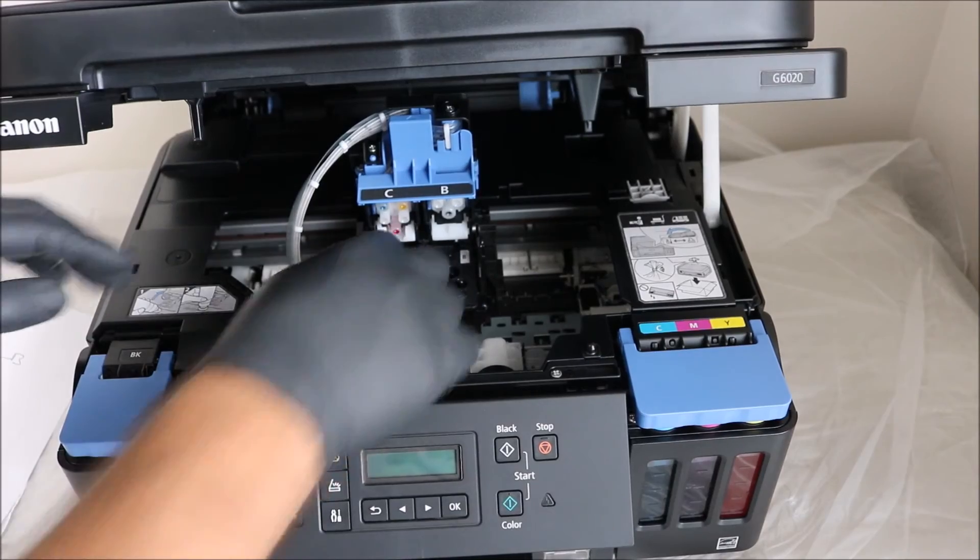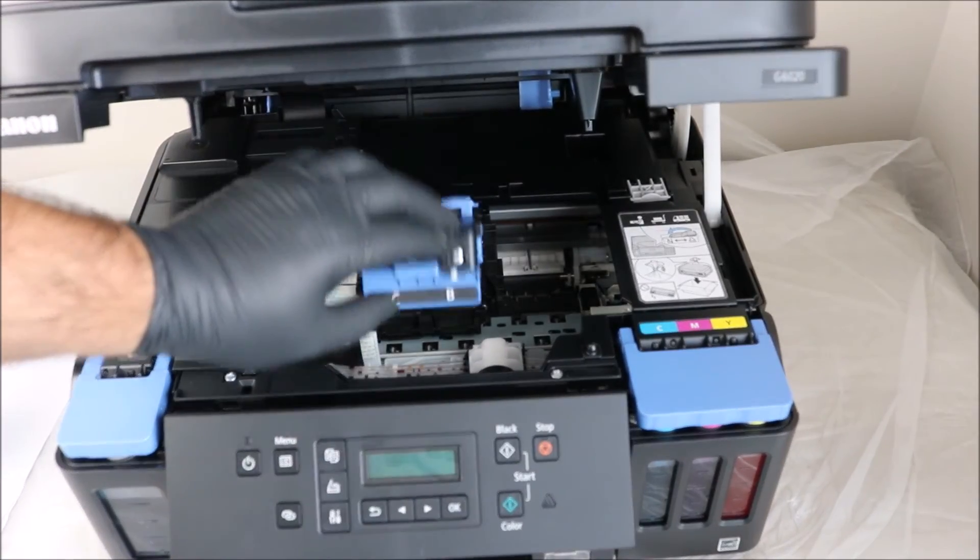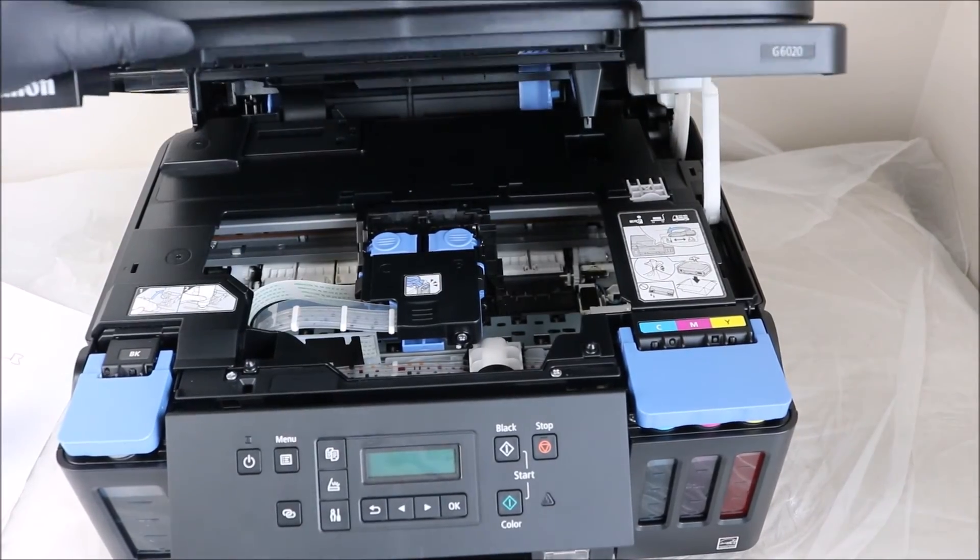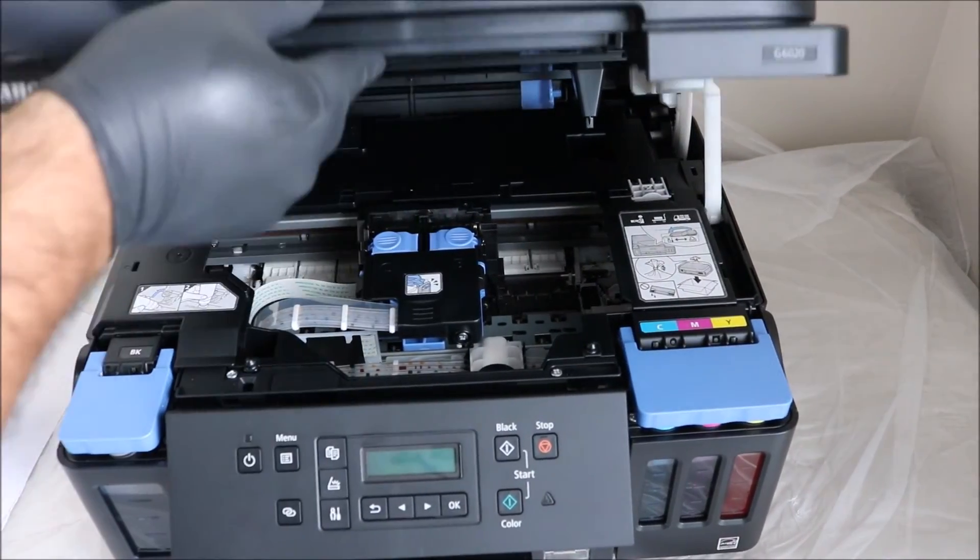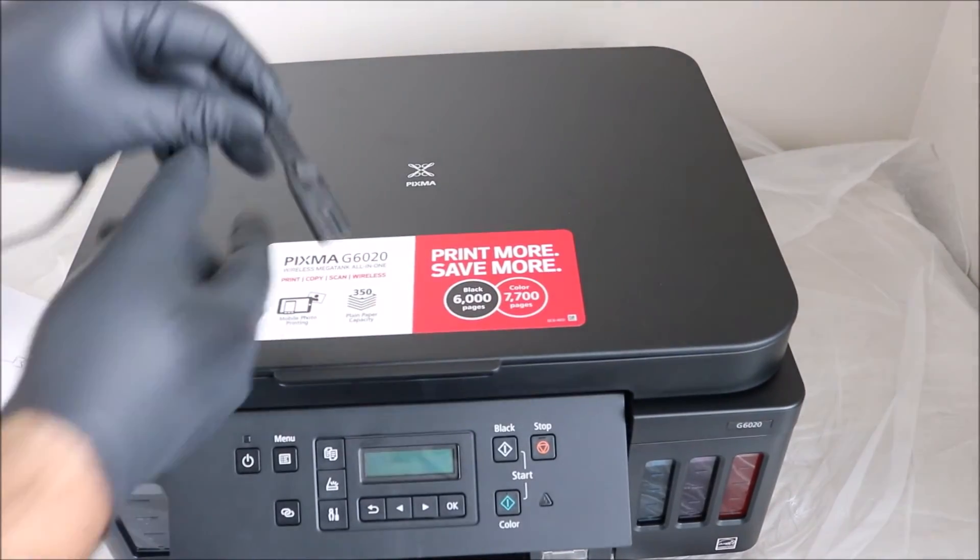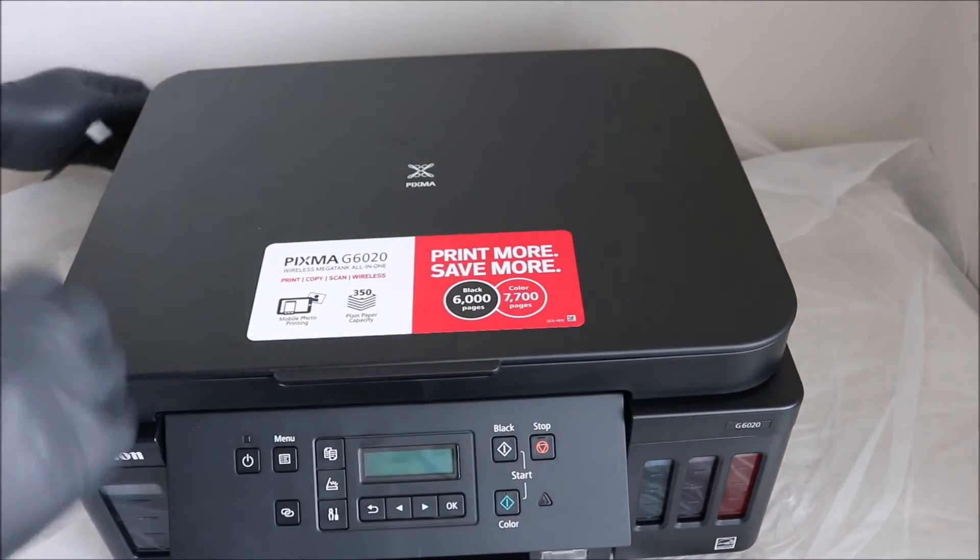So once you're done, you're going to want to dry everything off and then you're going to reinstall the print heads just like you do when you first are installing the printer. You're going to close down the print head carriage and click down those two fasteners for the print head. You're going to close that up and now you're going to power the printer back on.